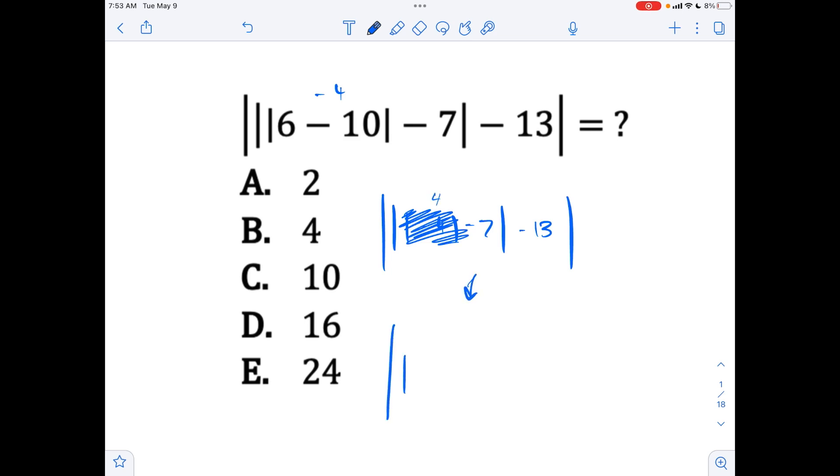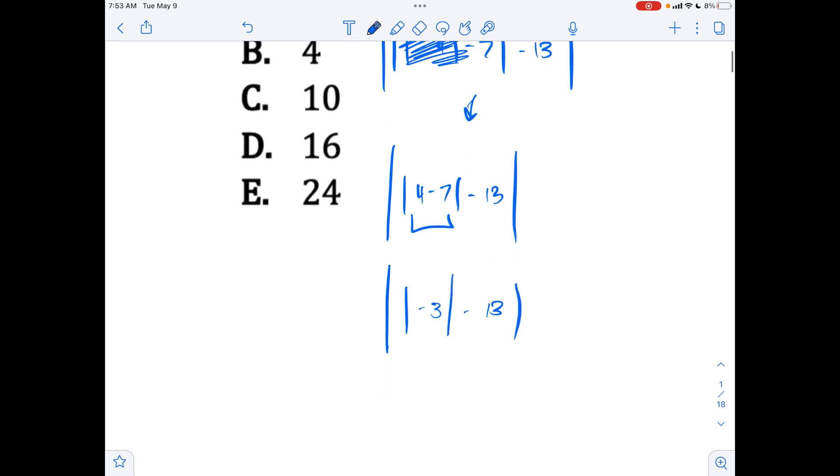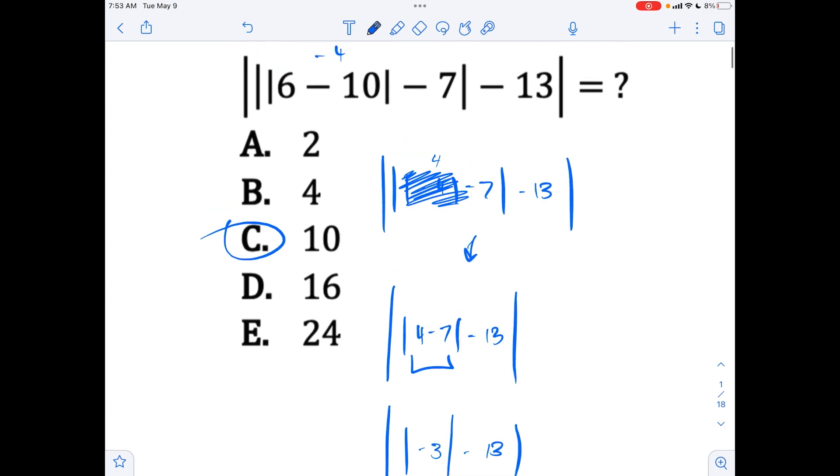Now let's rewrite the problem. Absolute value, absolute value, negative four minus seven, absolute value, minus 13. I can evaluate this as absolute value of absolute value of negative 3 minus 13 and that turns into absolute value of 3 minus 13 and this turns into absolute value of negative 10 which gives me 10. So that's your answer right there. Really taking it bit by bit and making sure you're not making those sign mistakes is how you do this type of thing.